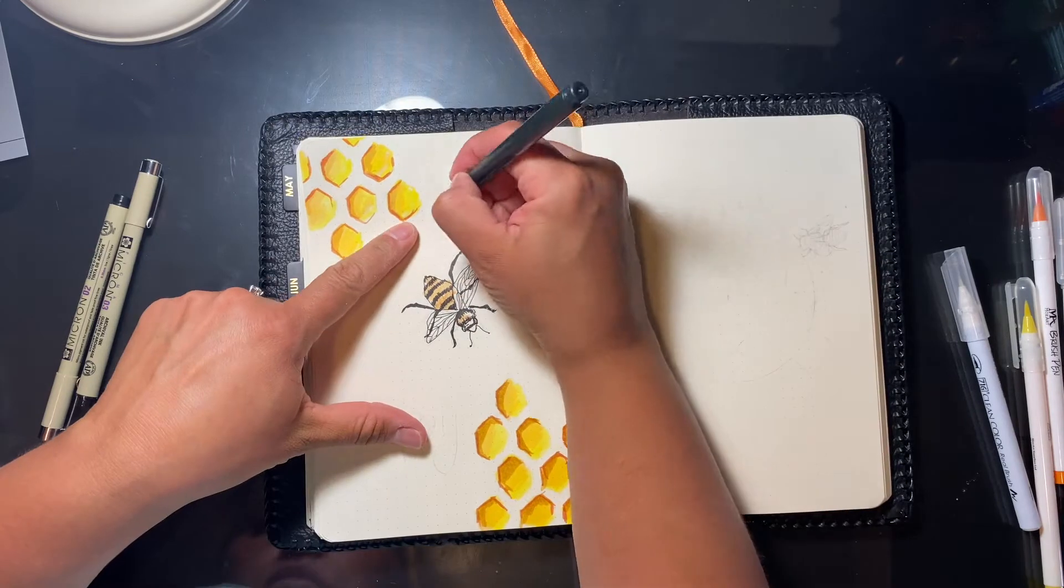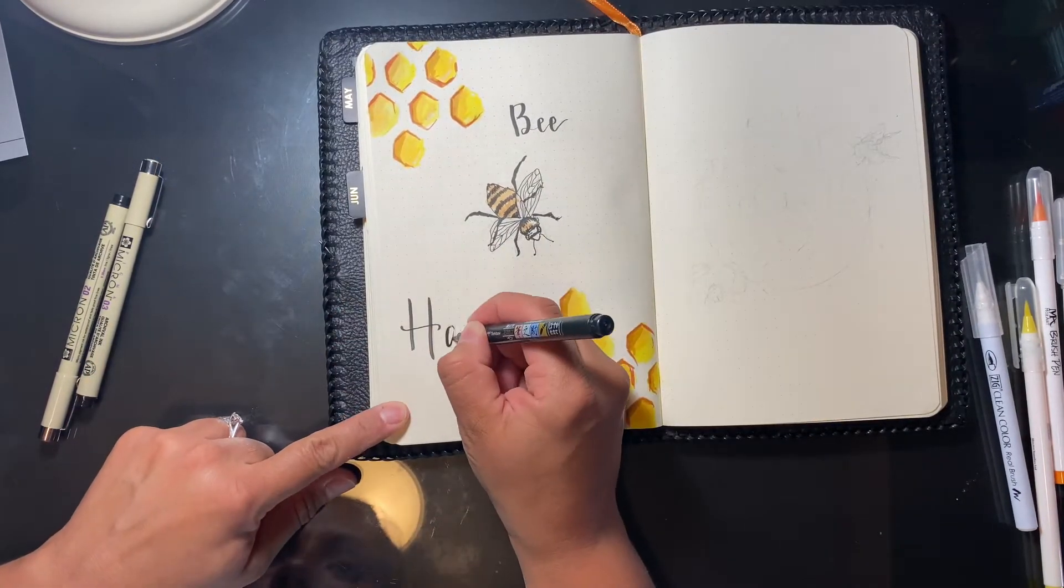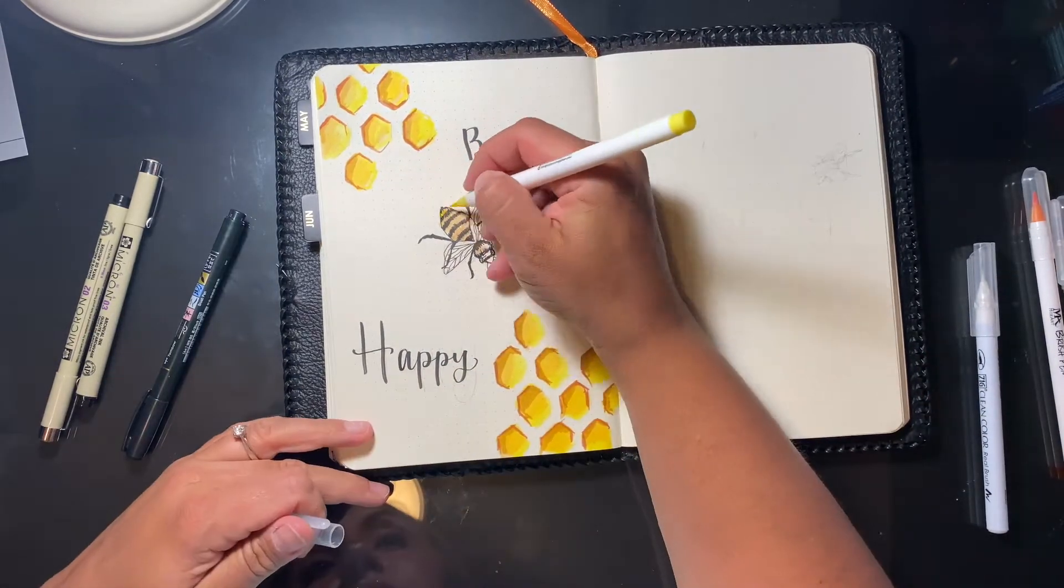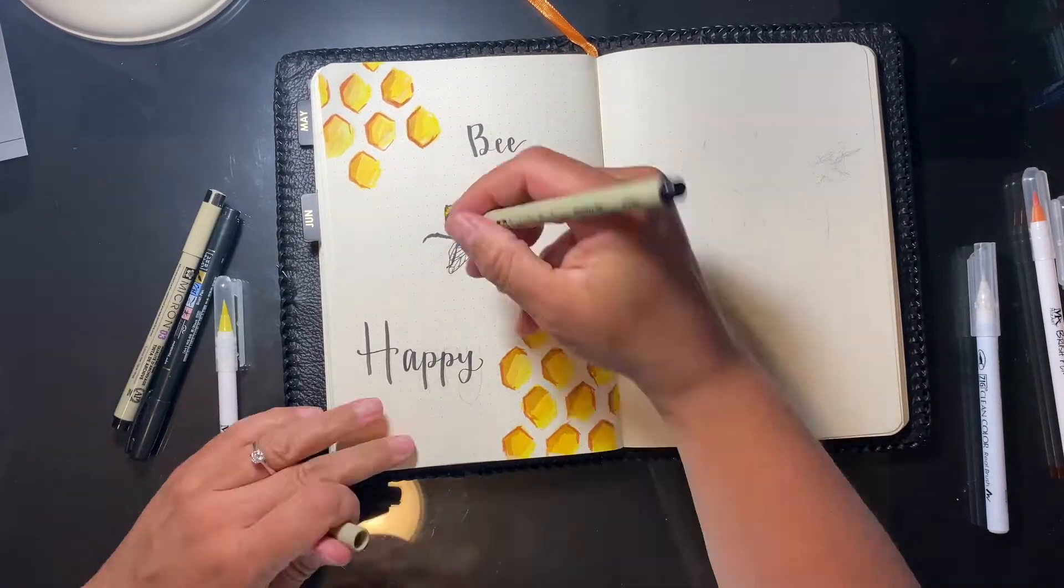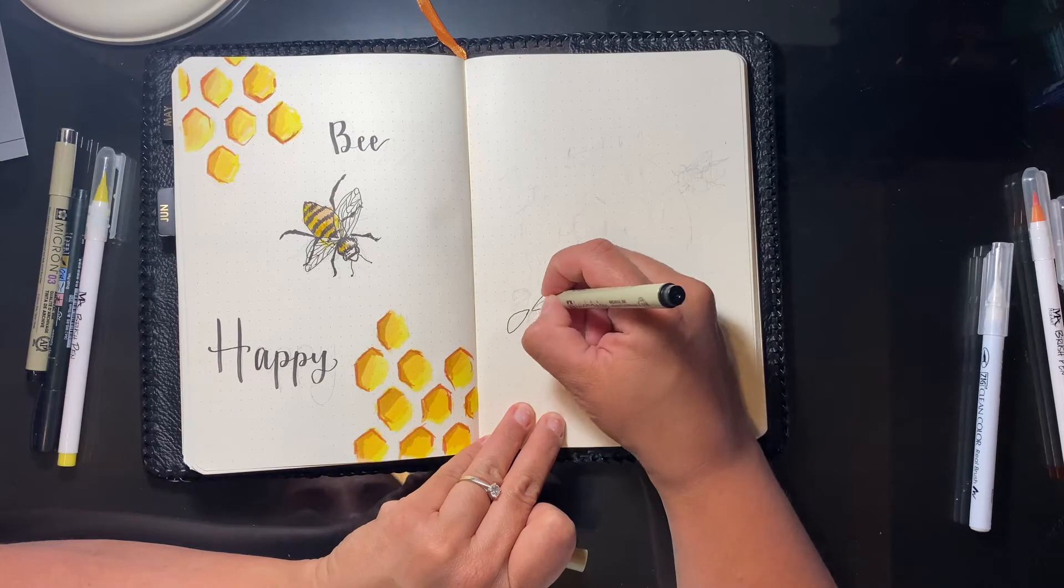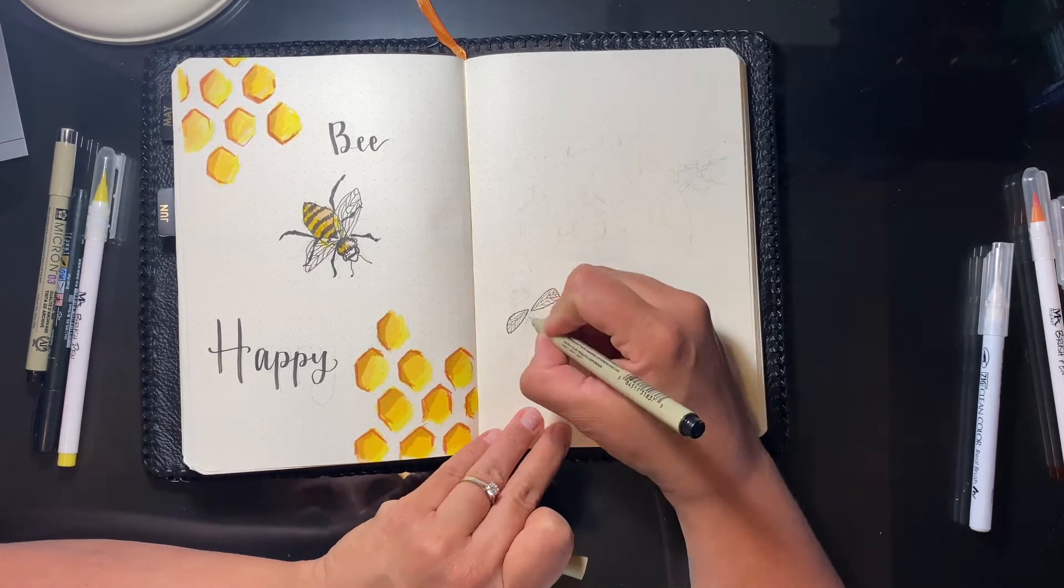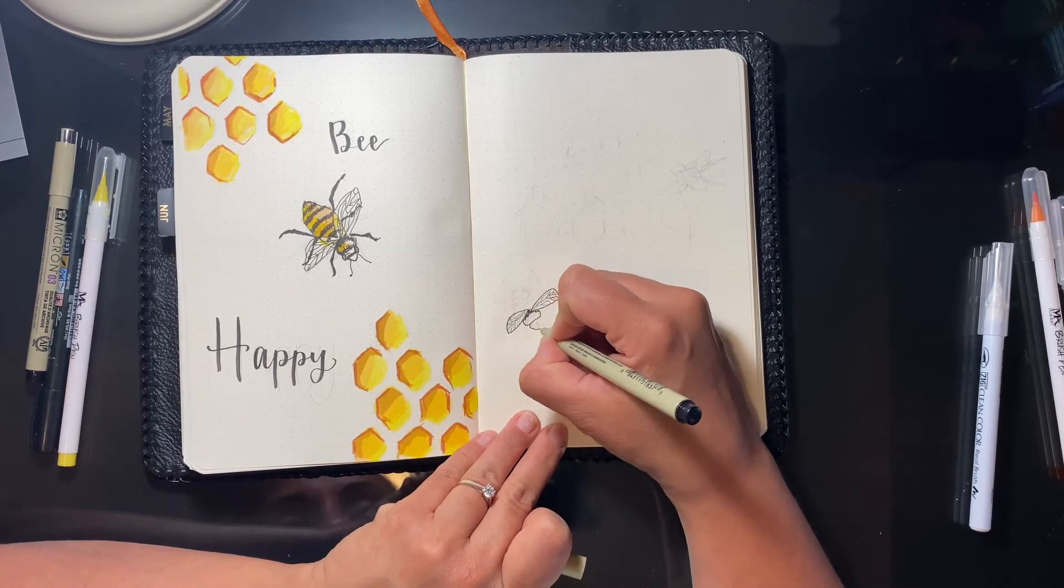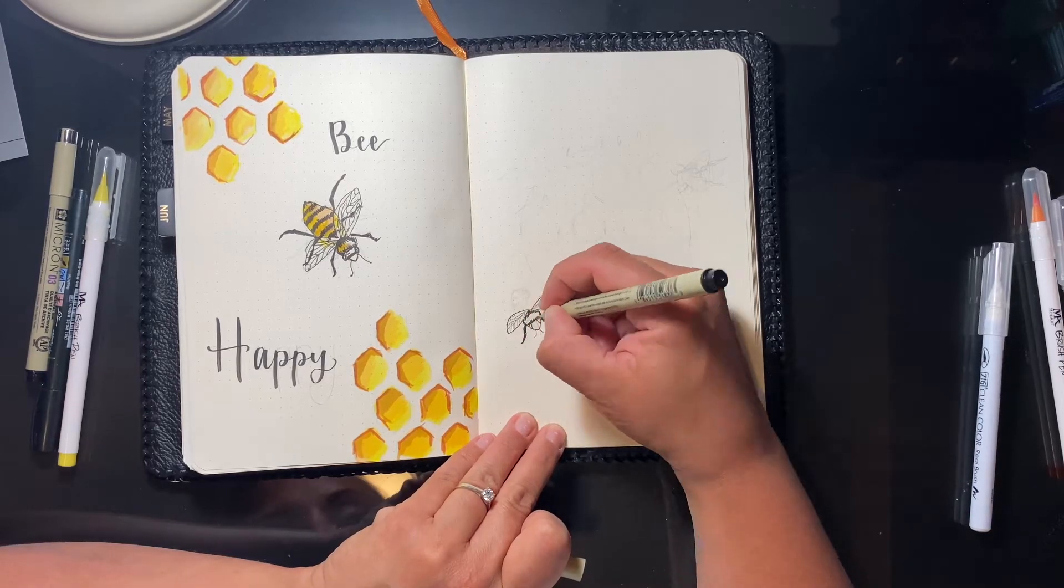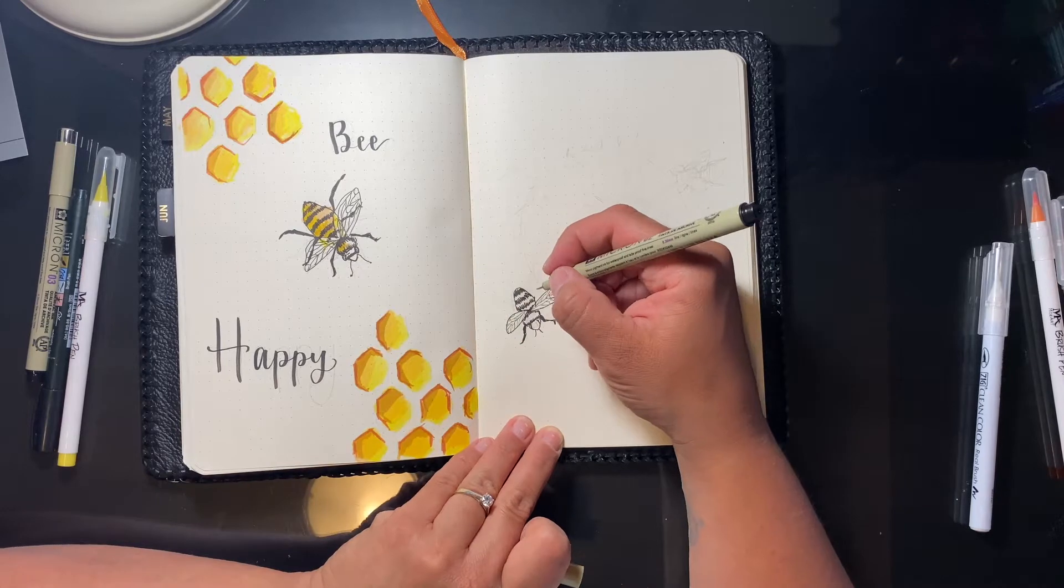With the Rhodia pages, they're quite thin, I believe 80 or 90 gsm, and they honestly don't hold up to many brush pens or especially watercolor. Anyway, on the left side I just said 'Bee Happy' and drew a little bee. On the right side I put the month of July and decided to draw a circle with a whole bunch of honeycombs inside and some bees surrounding it.